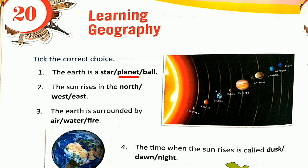Number 2: The Sun rises in the north, west or east? The Sun rises in the east. Number 3: The Earth is surrounded by air, water or fire? The Earth is surrounded by air.